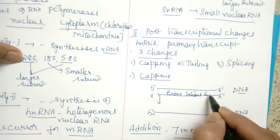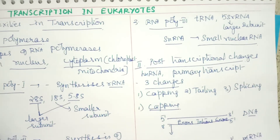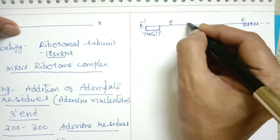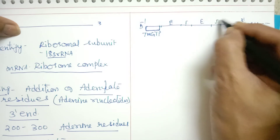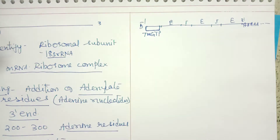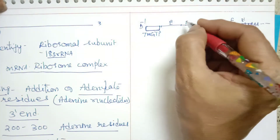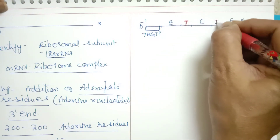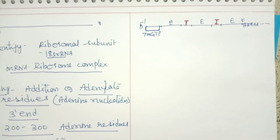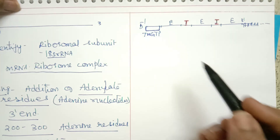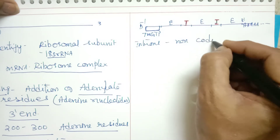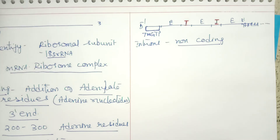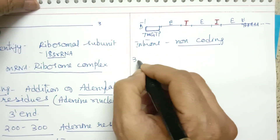Exons and introns: introns are non-coding sequences — they do not code for any amino acid. Therefore, they have to be removed. The removal of introns is done in the third step called splicing. Splicing is the process of removal of introns and joining of exons, carried out by the enzyme RNA ligase.